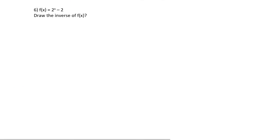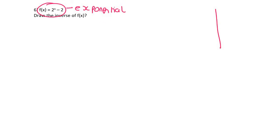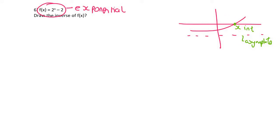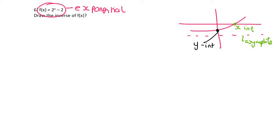In question 6 we follow an almost identical approach to number 5, but we need to recognize this is an exponential graph, not a parabola. For an exponential, the important things are: an asymptote, an x-intercept (though not always present — if the graph doesn't cross the x-axis, there won't be one), and a y-intercept (always present).